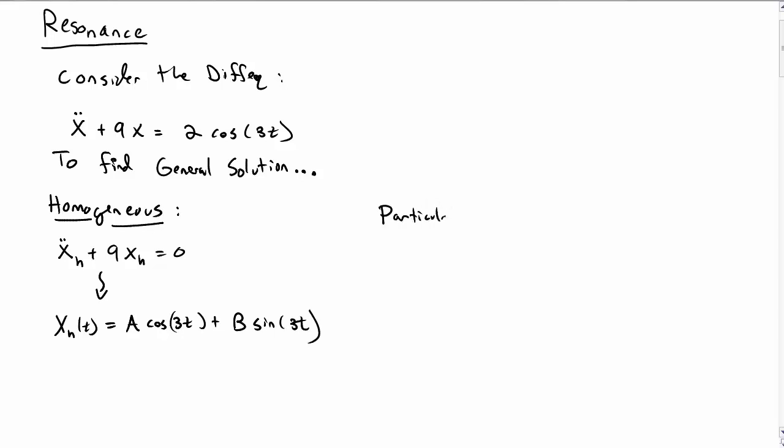The second part of finding the general solution is to find the particular solution. As with the method of undetermined coefficients, we would take a guess that the particular solution looks like C cosine of 3t plus D sine of 3t. It has the same form as the term on the right-hand side.